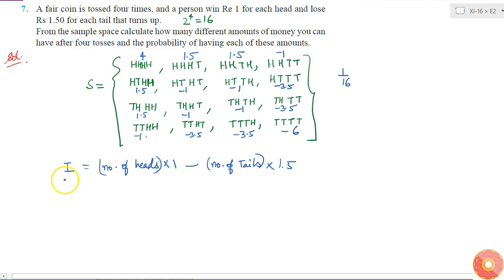If we can see, I can take the values either 4, 1.5, minus 1, minus 3.5, or minus 6. And I also need to find the probability of having each of these amounts.